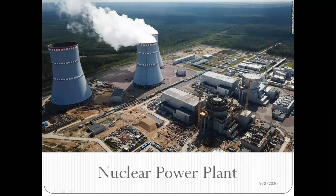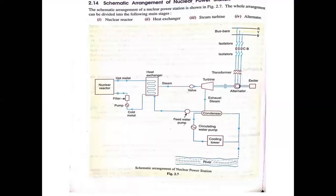Today we will discuss the schematic diagram of the nuclear power plant. You can see in this slide there is a nuclear reactor where nuclear fission takes place. Uranium is used as nuclear fuel to produce nuclear energy, and this energy is used to boil the water and convert it into steam - all happening inside the nuclear reactor. From the nuclear reactor there is a pump, and we have cold water coming in from the heat exchanger.